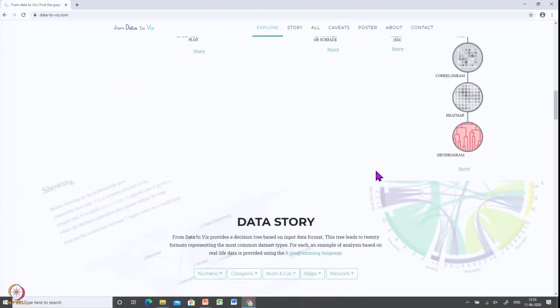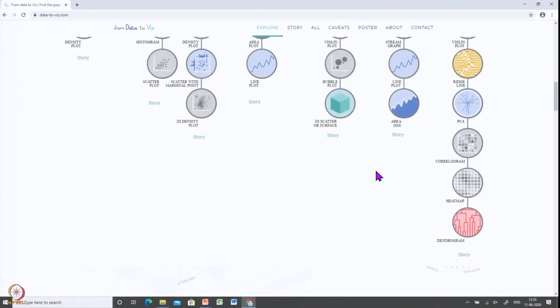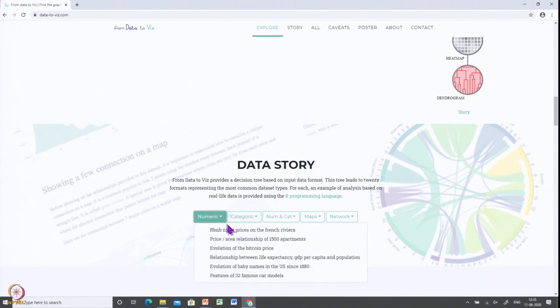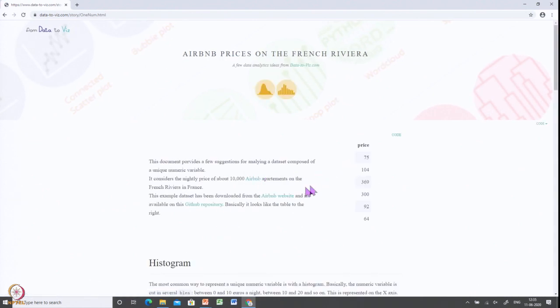And you can look at the script. If you can use the script in your script language, it can be JavaScript or Python or R. You can also see the examples - he has given examples of how to compare different values like the Airbnb price in France.